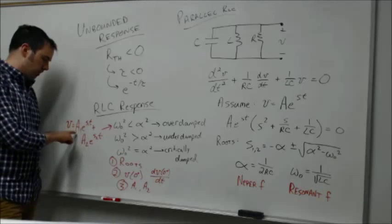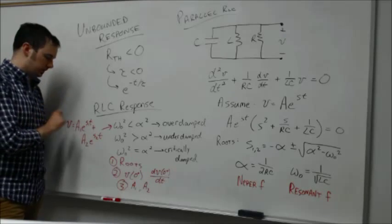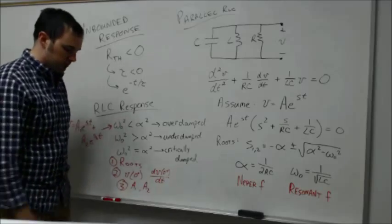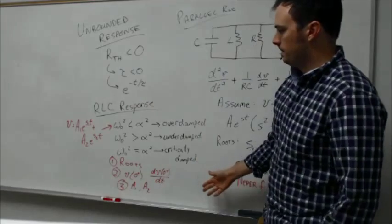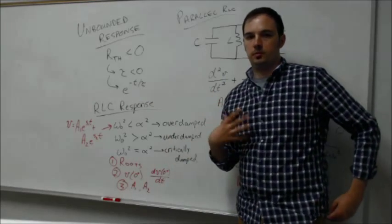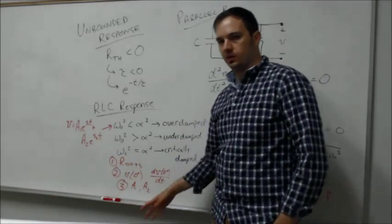The A1 and A2 terms which will come up in solutions for any of the different responses are going to have to be determined by the initial condition of the circuit. In solving a given RLC circuit, a general strategy to take is, first, evaluate what these roots are.